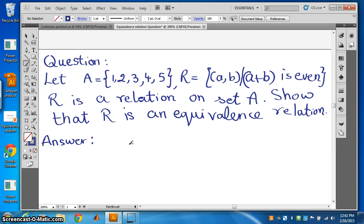Let's try one question on equivalence relation. Given A is equal to {1, 2, 3, 4, 5} and R is equal to the set of ordered pairs (a,b) such that a plus b is even.